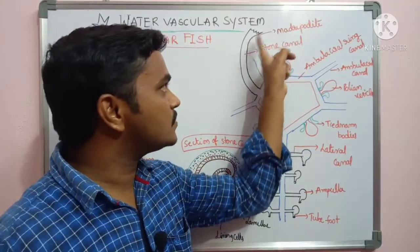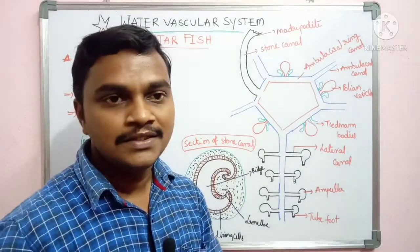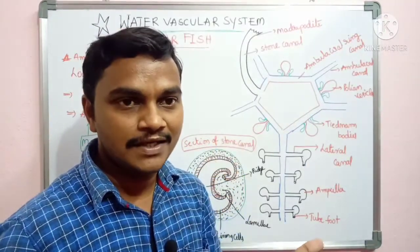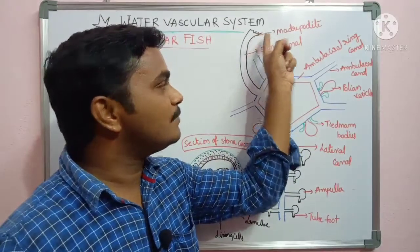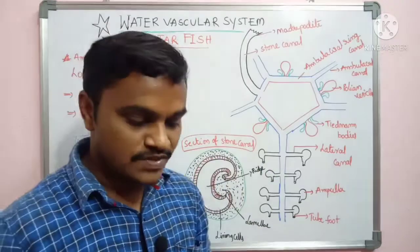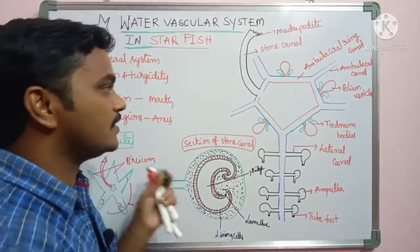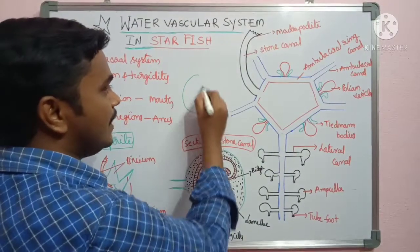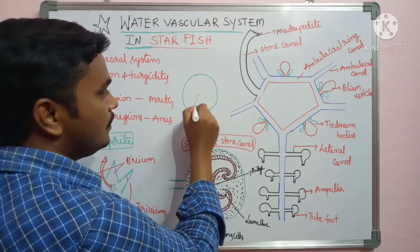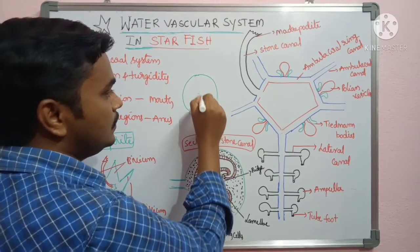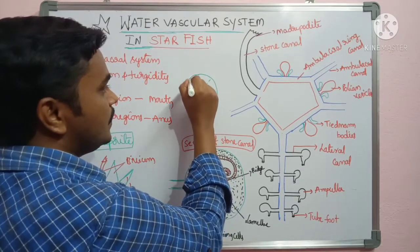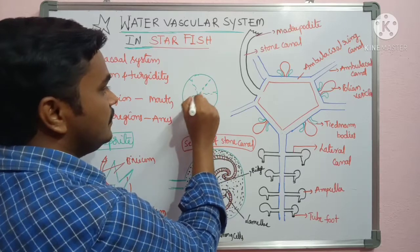In the aboral region there is a tube-like structure called the madriporite. The madriporite is a sieve-like structure, also called a filter plate. If you see the cross-section of the madriporite, it contains a number of filtering plates — these are the sieve plate appearances present in the madriporite.